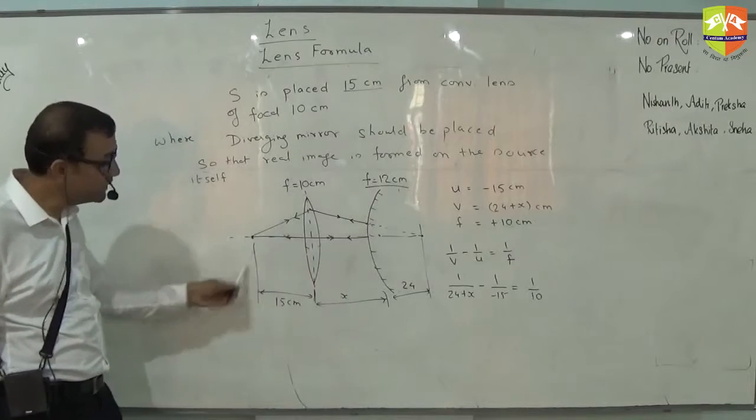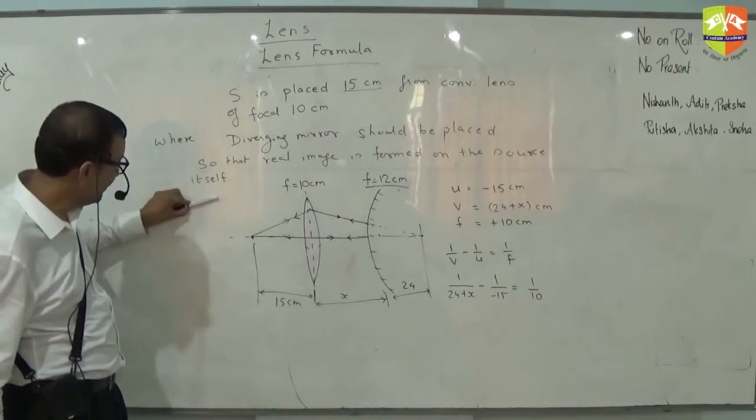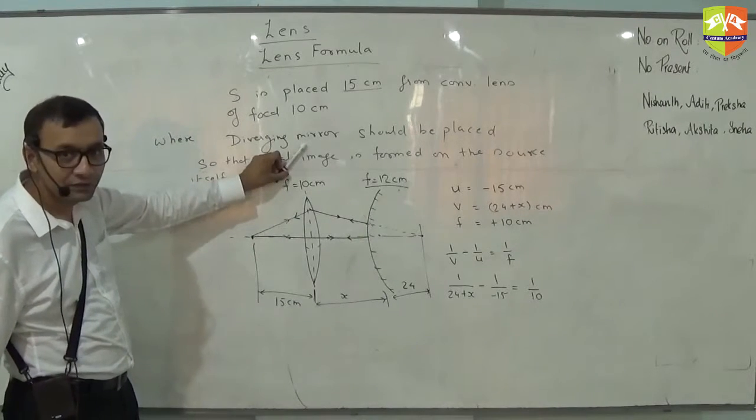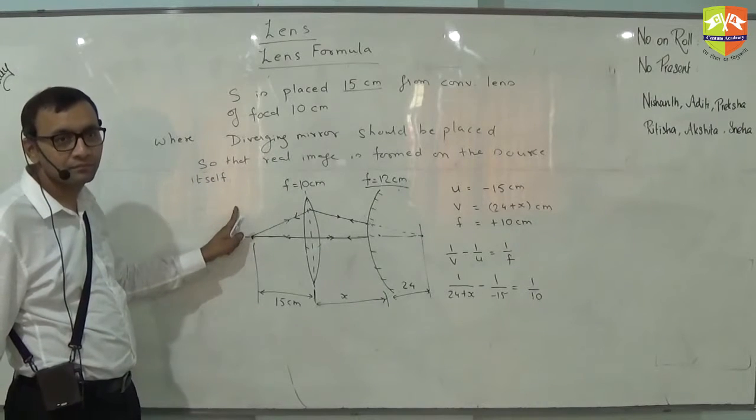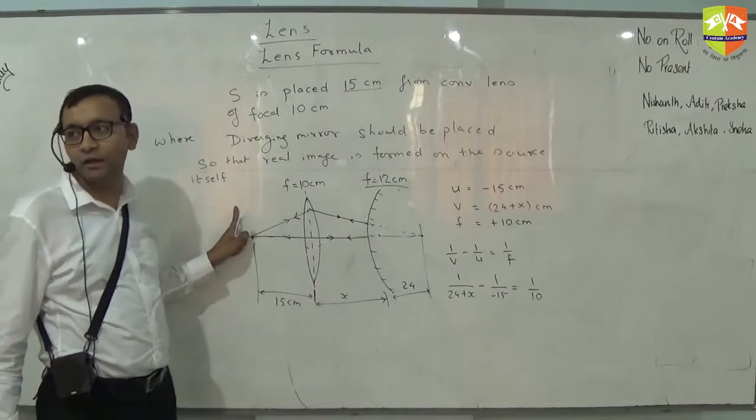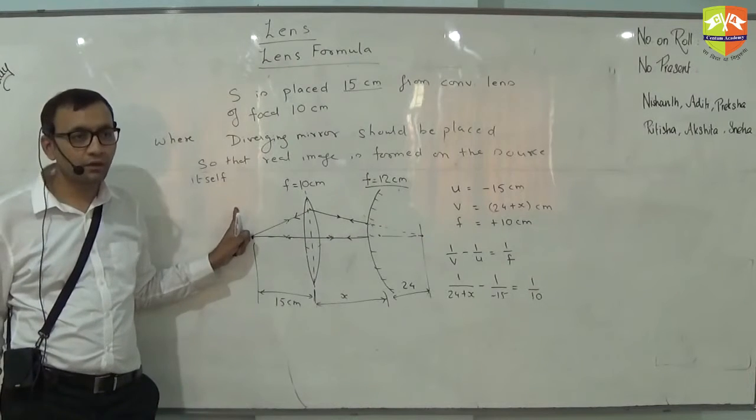Had it been a diverging lens, then what will happen? It will go like this and diverge. Then you consider this focal point. Then focal length will be negative.